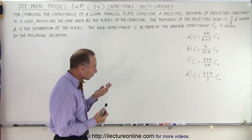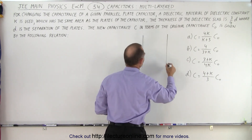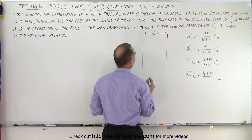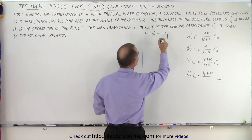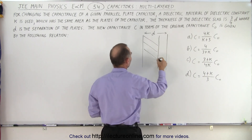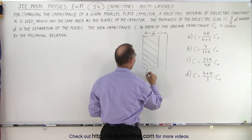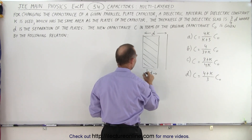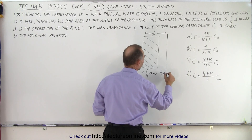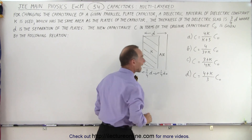So how do we think about doing that problem? Let's draw a capacitor. It starts out like this, where D is the separation distance between the two plates, and we're going to put a dielectric slab in there which covers three-quarters the distance between the plates. That means we have one quarter the distance right here, from there to there. So this is still air, and this has dielectric constant K.